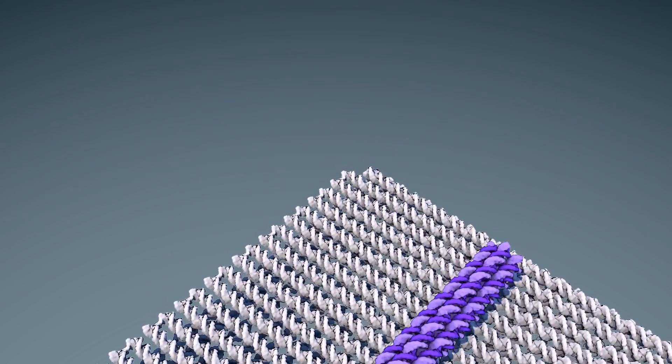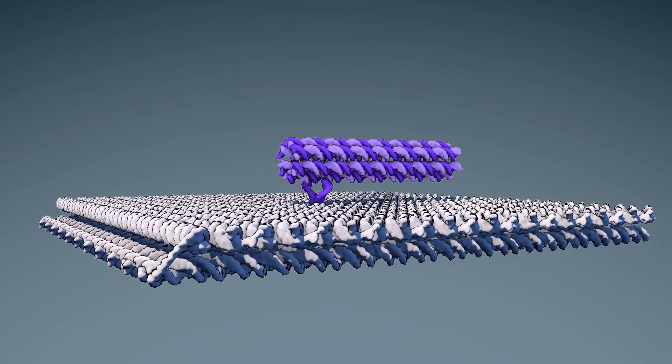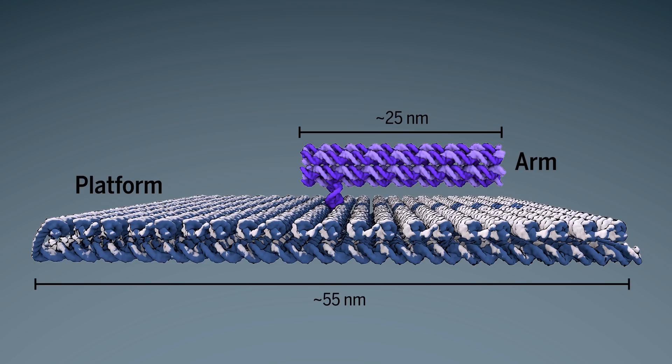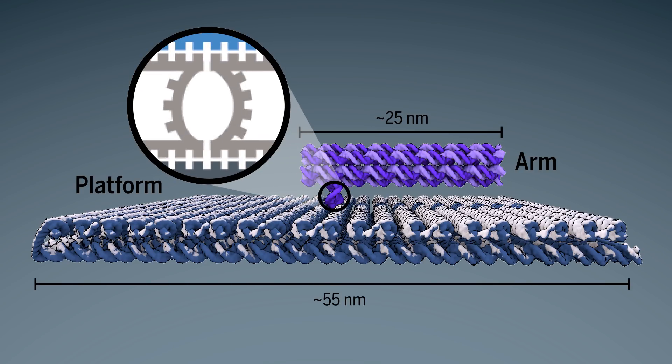The robot arm rises up out of a flat DNA platform on a glass slide. While the arm is made out of relatively rigid DNA helices bundled together, it's attached by flexible single-stranded DNA pieces that allow it to rotate.